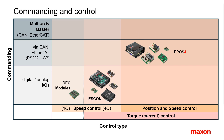EPOS position controllers are CANopen or EtherCAT slaves. Set values and all other commands are sent across the CAN bus system; lower-performance alternatives are serial RS-232 or USB connections. EPOS controllers are not only position controllers but can also be set up for torque or speed control. EPOS 4 is the newest generation with improved performance and power, featuring a modular design that allows further implementation of additional features.